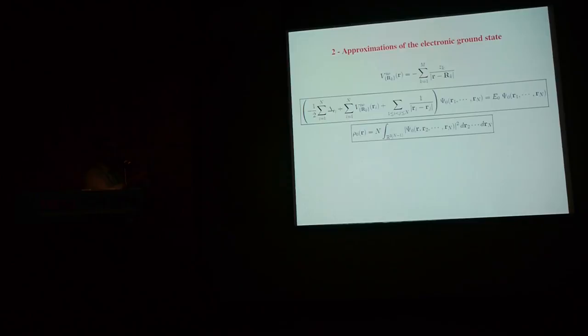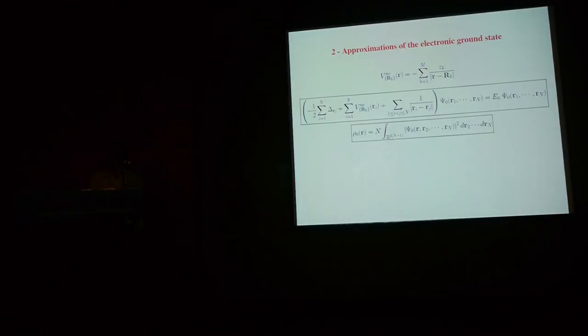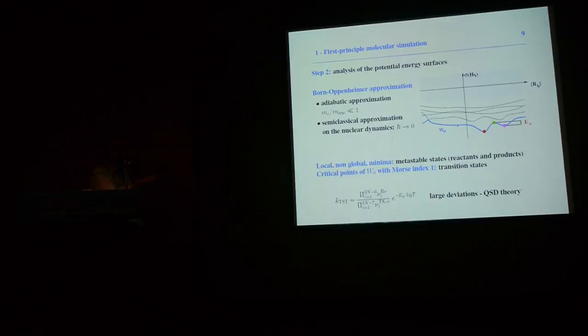From now on, I will assume I have a given molecular system with fixed nuclear positions. My goal is to solve the N-body Schrödinger equation. In applications, I don't need ψ₀ itself. What we really need is the energy E₀ to construct the potential energy surface, and also the electronic ground state, because from it we can compute several properties of the molecule and the gradient of W₀ at a given point — very helpful for locating minima.